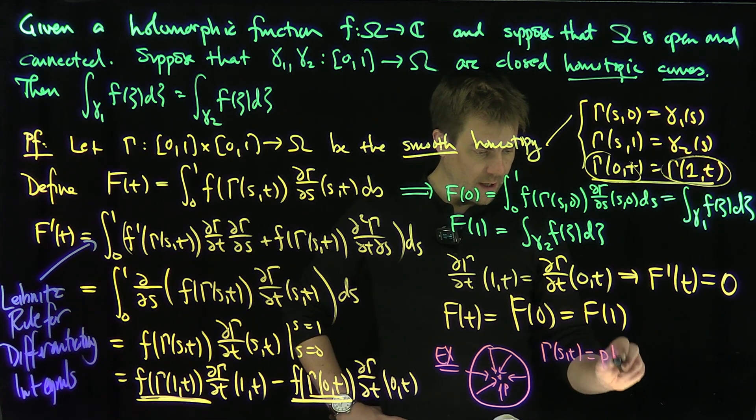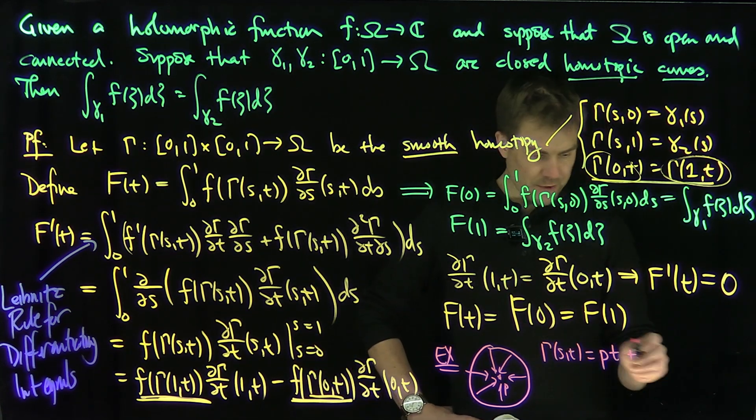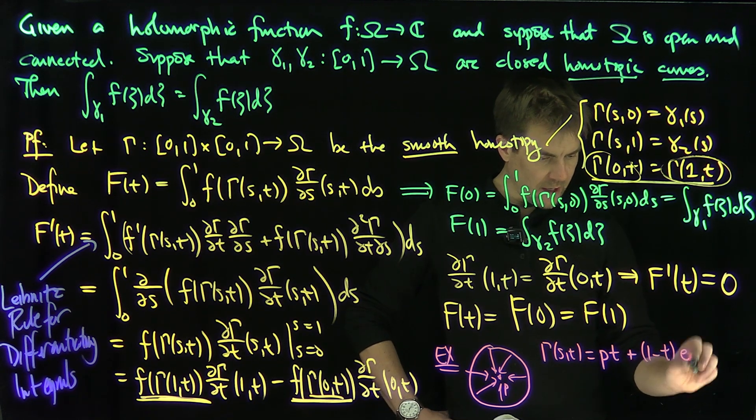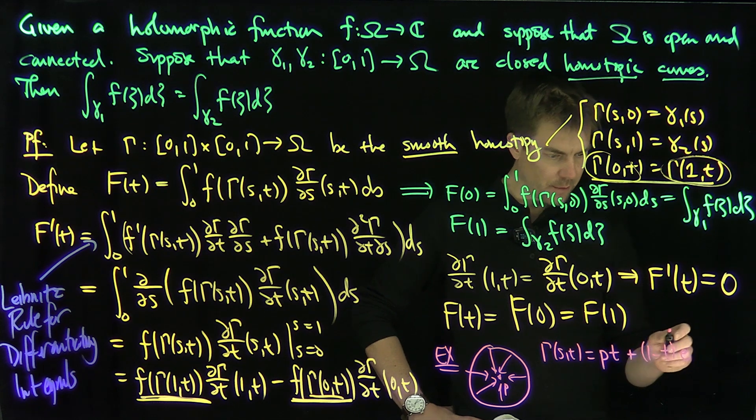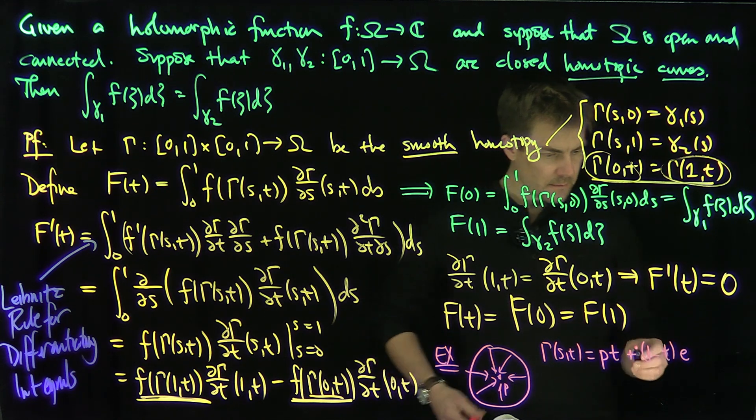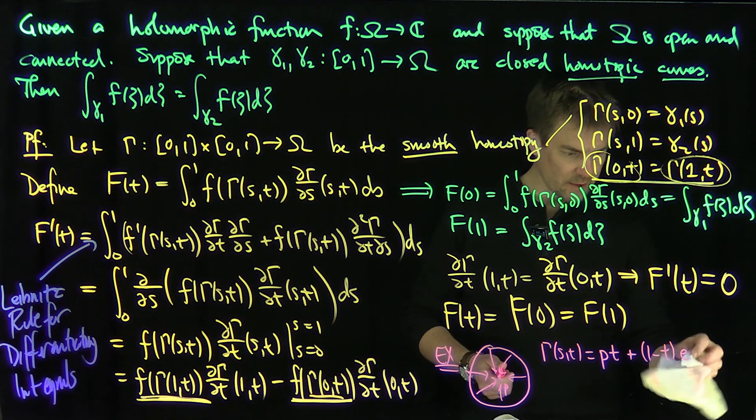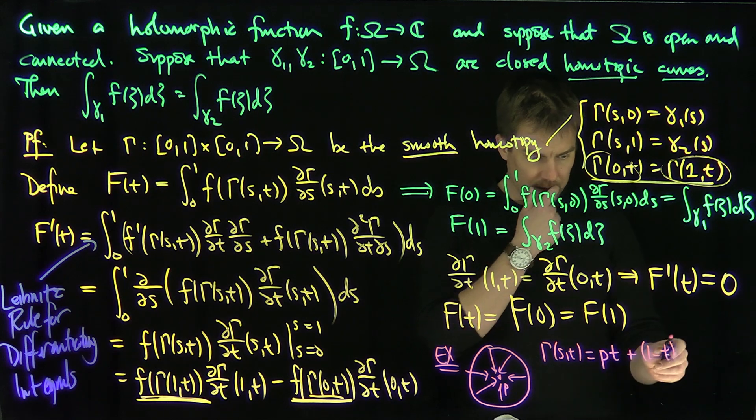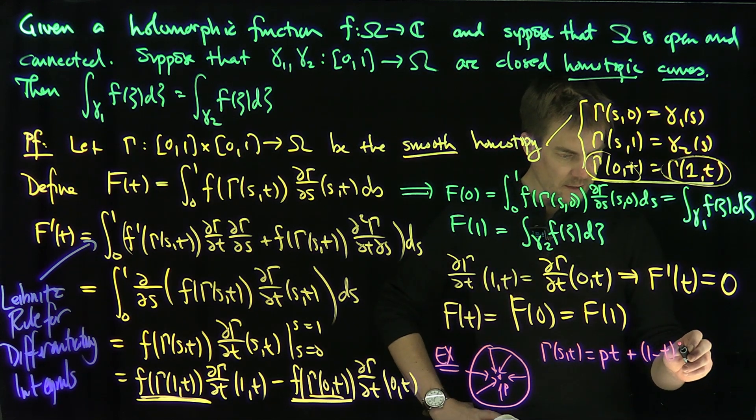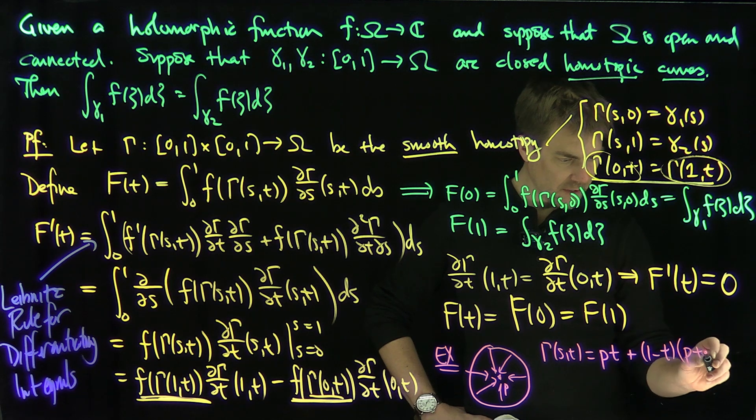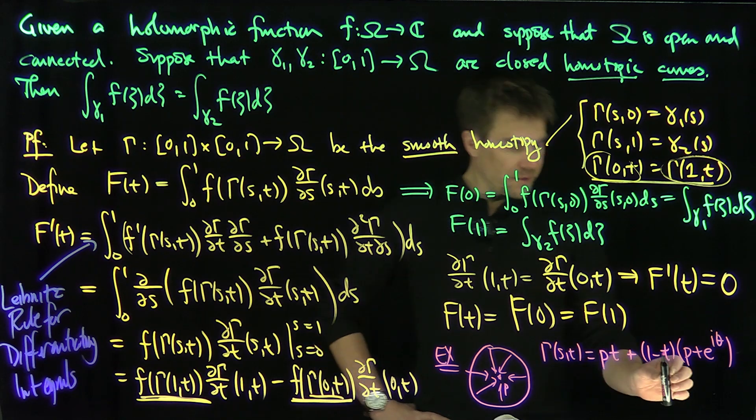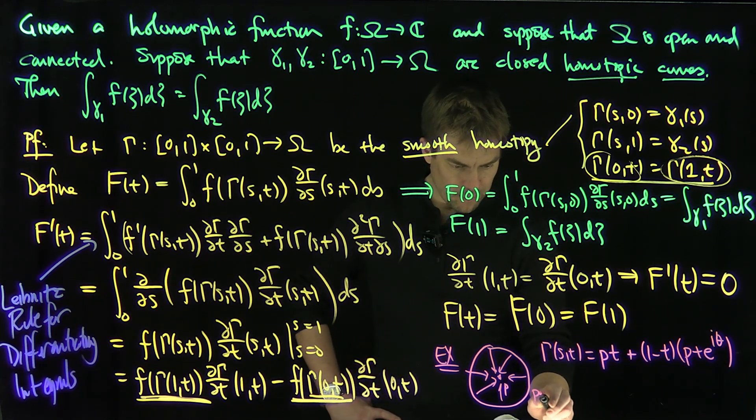It's just going to be P plus, if it's a circle, P and then (1 minus T) e to the i theta, for example. It's a circle, that radius. This is centered at P. So I plug in P, when I plug in T equals 0, I get this circle over here. So the circle is going to be P plus e to the i theta. That's my circle. And of course, when T is equal to 0, I get P plus e to the i theta. That's this circle over here.